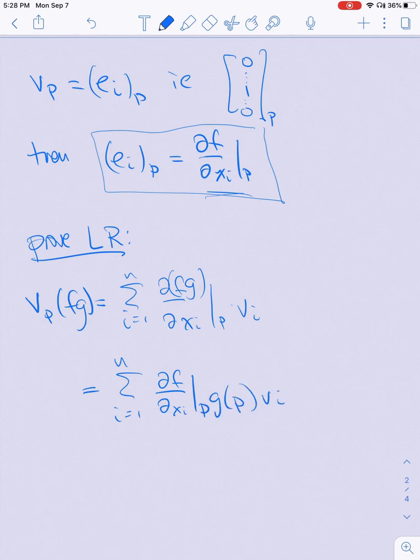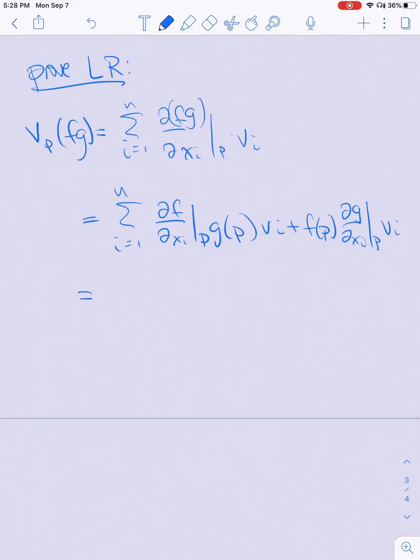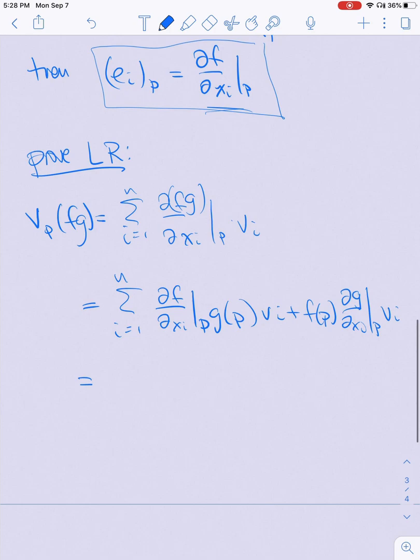Now I can go to the sum from i=1 to n of df/dx_i at p times g at p times v_i plus f at p times dg/dx_i at p times v_i, using the regular product rule. This is basically writing out my function v in terms of these partial differential operators df/dx_i at p.